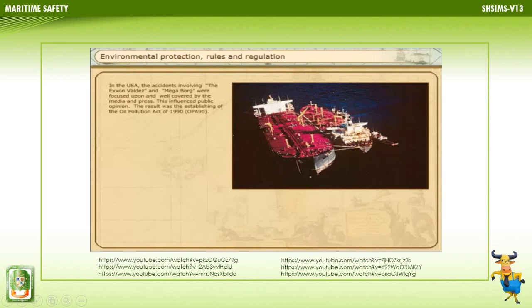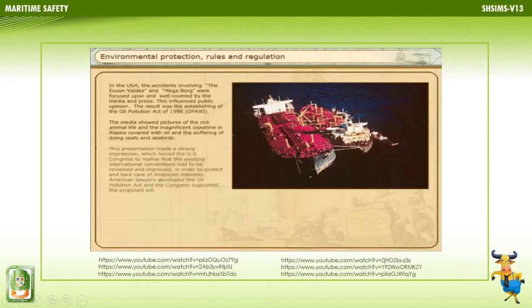The result was the establishing of the Oil Pollution Act of 1990, OPA-90. The media showed pictures of rich animal life and the magnificent Alaskan coastline covered with oil, and the suffering of dying seals and seabirds. This made a strong impression, forcing the US Congress to review and improve existing international conventions to protect American interests.